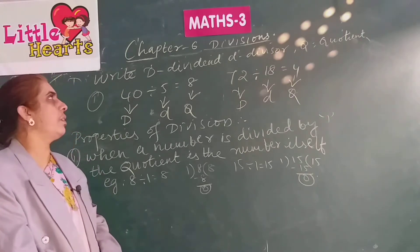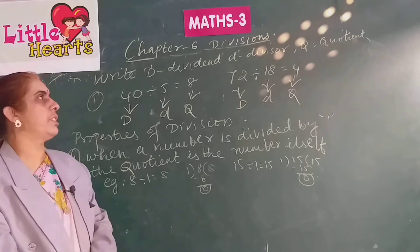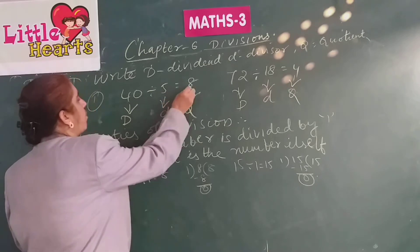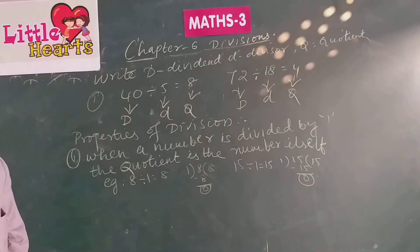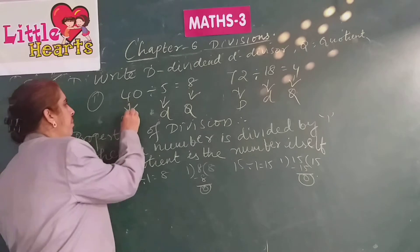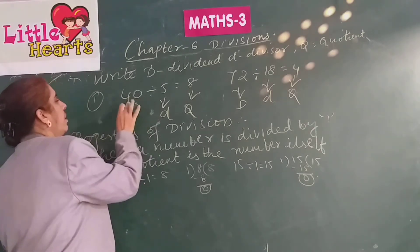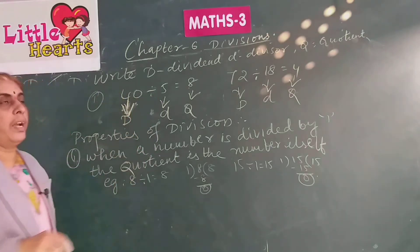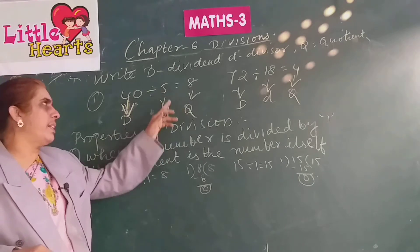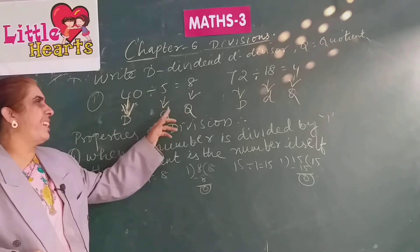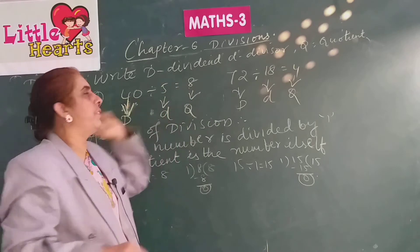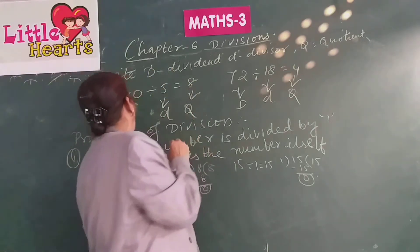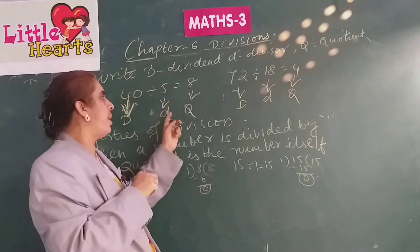We have already learned what a dividend is in a division fact, what is a divisor, and what is a coefficient. Here is a division fact: 40 divided by 5 is equal to 8. The biggest number is always the dividend, which is to the left side of the division symbol. The number by which we divide is called the divisor. And the answer you get after division, which is after the equals sign, is the coefficient. In this, 40 is the dividend, 5 is the divisor, and 8 is the coefficient.